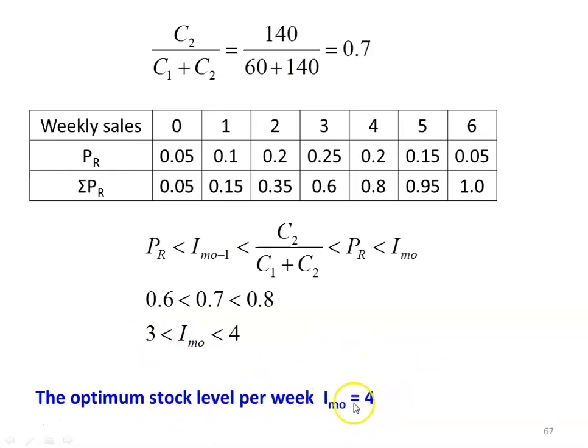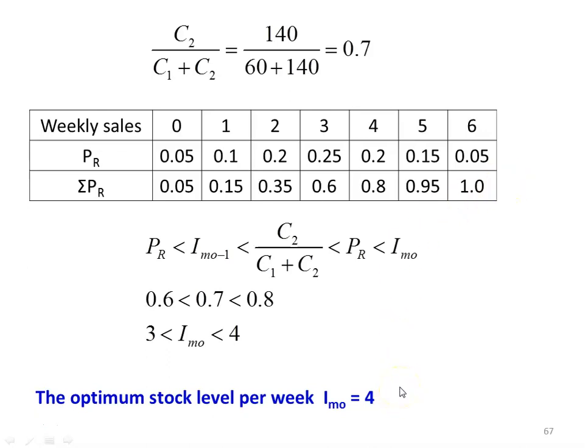With 4 items in the stockyard, if demand is 4 all four will be sold. If demand is only 3, one item will remain in storage and we incur holding cost. This is the answer to the problem.